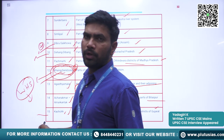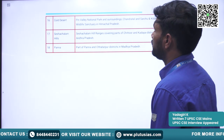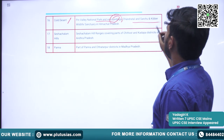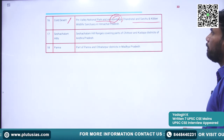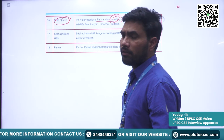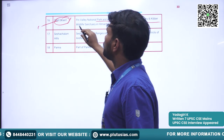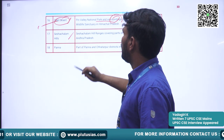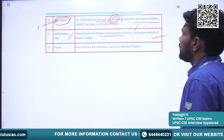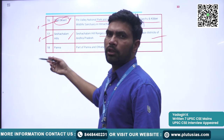Kutch is also not under the protection of UNESCO. Next is Cold Desert — Pin Valley National Park and surroundings, Chandratal, Sarchu, and Kibber Wildlife Sanctuaries are part of the Cold Desert Biosphere Reserve. This is also not under UNESCO protection. Next is Seshachalam Hills — the Seshachalam Hill Ranges covering parts of Chittoor and Kadapa districts of Andhra Pradesh, also not under UNESCO protection.